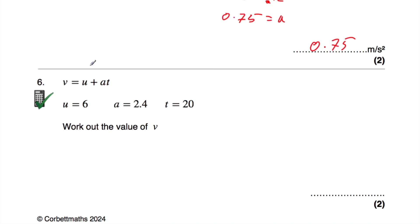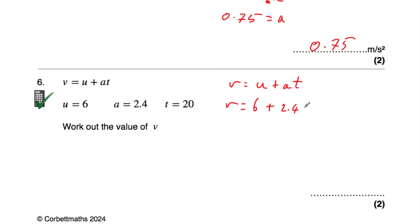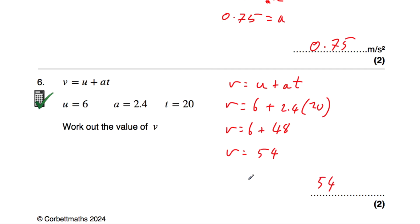Question number 6: v equals u plus at, with u equal to 6, a equal to 2.4, and t equal to 20. We're trying to find v, so v equals 6 plus 2.4 multiplied by 20. 2.4 times 20 is 48, so v is equal to 6 plus 48, which is 54. So v is equal to 54.